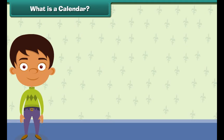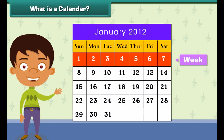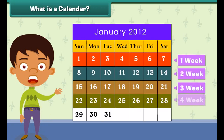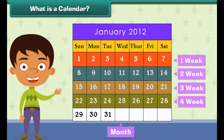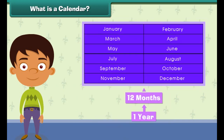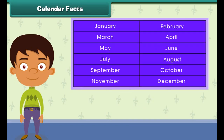What is a calendar? Look at this calendar. You see days written in some fashion. A calendar groups days into weeks, weeks into months and months into year. Each day is different.